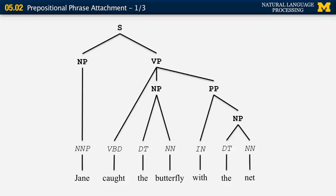Let's now look at the phrase structure of a sentence that includes a prepositional phrase. 'Jane caught the butterfly with the net.' As you can see, 'with the net' is a prepositional phrase that in this case modifies the verb 'caught' — it does not modify 'butterfly.' It essentially denotes the way in which the butterfly was caught. If for any reason the butterfly was carrying the net, we would have the prepositional phrase 'with the net' listed under the noun phrase for 'butterfly.'